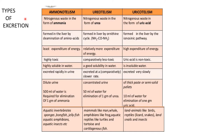Now let's see the types of excretion. There are three types: first is aminotelism, second is urotelism, and third is uricotelism. In aminotelism, the nitrogenous waste is in the form of ammonia. In urotelism, it is in the form of urea. In uricotelism, it is in the form of uric acid.